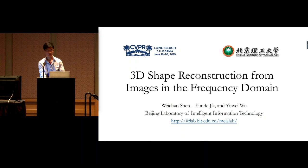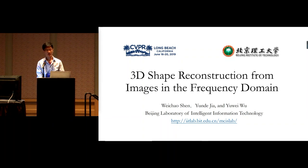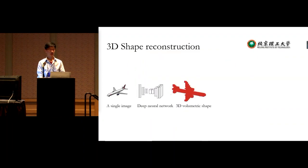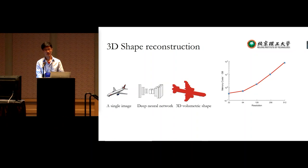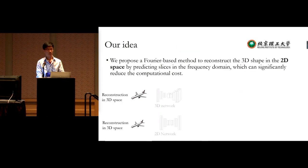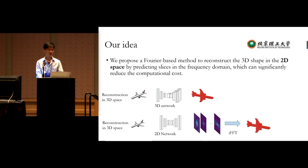I'm from Beijing Institute of Technology. I introduce our work on 3D shape reconstruction from images in the frequency domain. The representation is voxel. Deep neural networks have made progress in 3D shape reconstruction, but high-resolution reconstruction is challenging due to cubic growth of computational cost. We propose a Fourier-based method to reconstruct 3D shapes in 2D space by predicting slices in the frequency domain, achieving only square growth in computational cost.